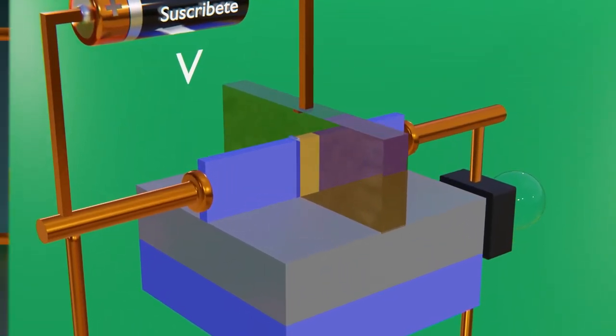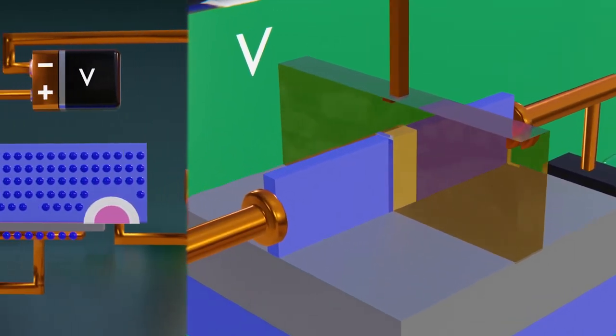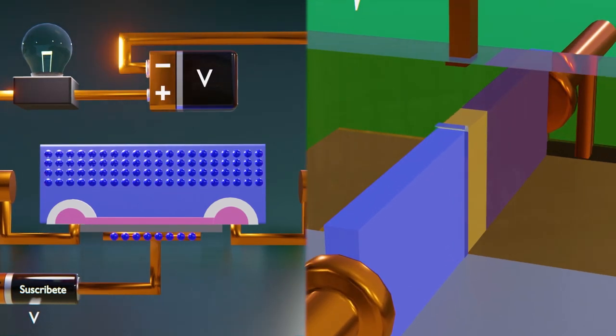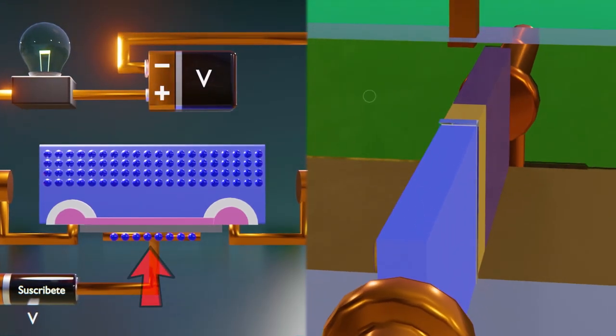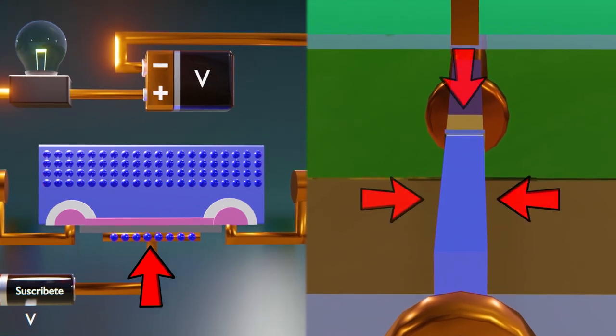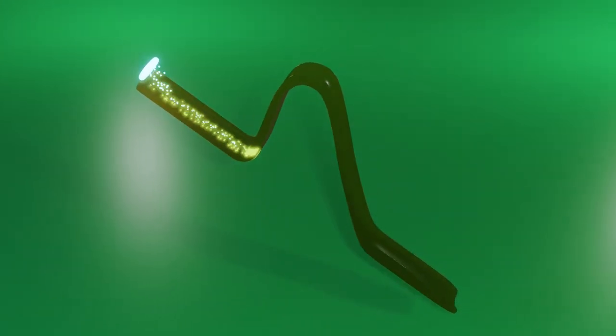If we compare the effect of the gate in a MOSFET versus what happens in a FinFET, we will realize that in the first case only one face of the channel is being controlled while in the FinFET three sides are being controlled at the same time, this being the secret of its effectiveness, since the potential barrier generated is much greater and therefore the probability that the electrons pass is decreased.